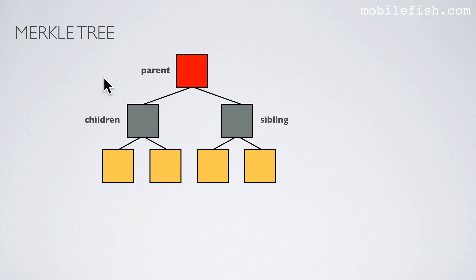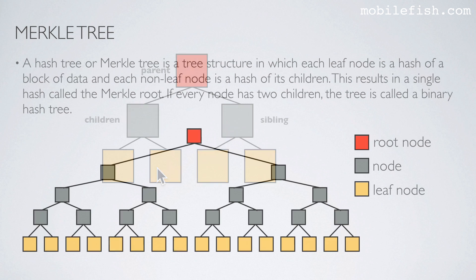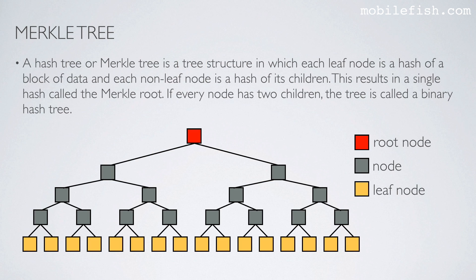Here is some Merkle tree terminology. If this is the parent, then these are the children of the parent. If this is the parent, then these two are the children of this parent. If we take this node as the reference, then this node is a sibling of that node. A hashed tree, or Merkle tree, is a tree structure in which each leaf node is a hash of a block of data, and each non-leaf node is a hash of its children.